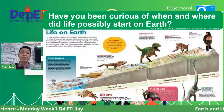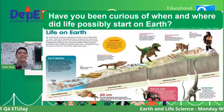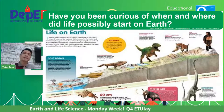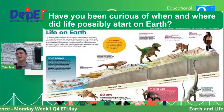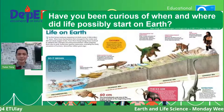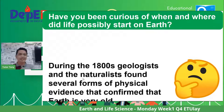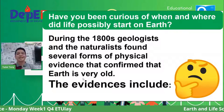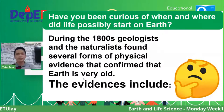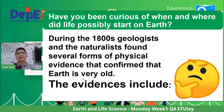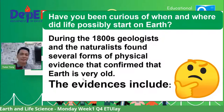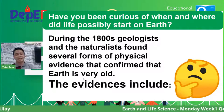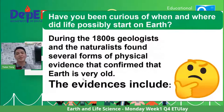Life actually began in water. That's why scientists say: if there's water, there could be life. That's why NASA scientists are looking for water on other exoplanets. During the 1800s, geologists and naturalists found several forms of physical evidence confirming that the Earth is very old, and they traced what life forms existed. What are the different evidences supporting the flourishing of life on planet Earth?